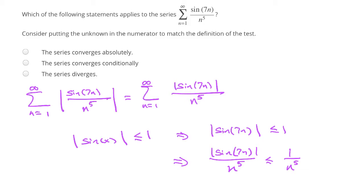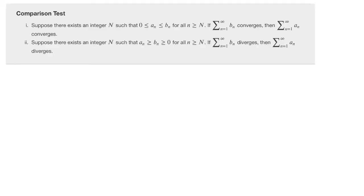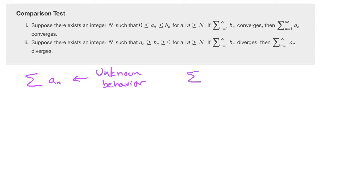That hints we are set to use the comparison test. As a reminder, the comparison test says that if we have a series with unknown behavior — a series a sub n — we don't know whether it converges or diverges. But we are able to compare it to a series with terms b sub n whose behavior is known.